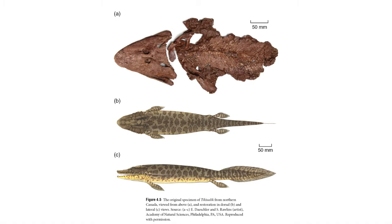Like Panderichthys, Tiktaalik features a flattened head with eyes positioned on the top of the head. The fossil has four sets of fins: two pectoral fins in the front and two pelvic fins in the back. A combination of fin rays and more robust bones are found in the fins. The back of the skull features ear notches for the tympanic membrane, supported by a stapes, which meant that Tiktaalik could listen above the water.